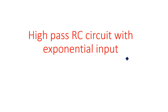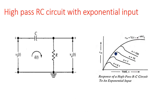In this video you are going to learn about the behavior of a high-pass RC circuit with exponential input. In the previous videos we have seen the high-pass RC circuit behavior with several inputs like sine wave, step input, pulse input, square wave, and ramp input. Now for exponential input, V_in equals V(1 - e^(-t/RC)) is given to the high-pass RC circuit, which has a capacitor followed by a resistor, with output taken across the resistor.